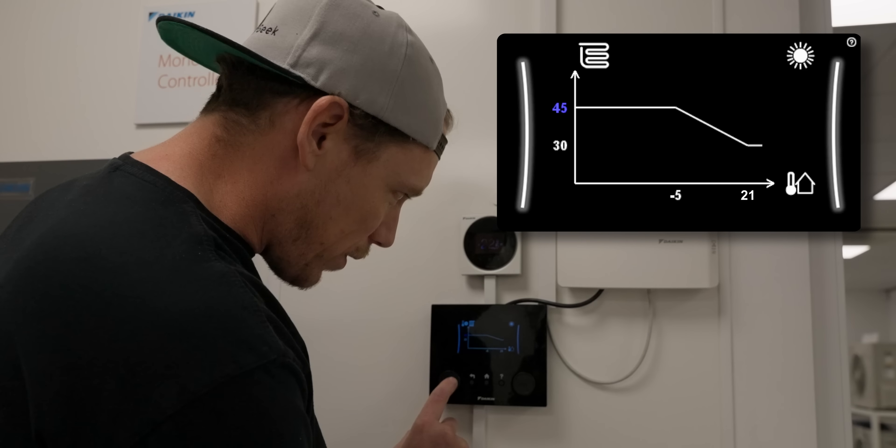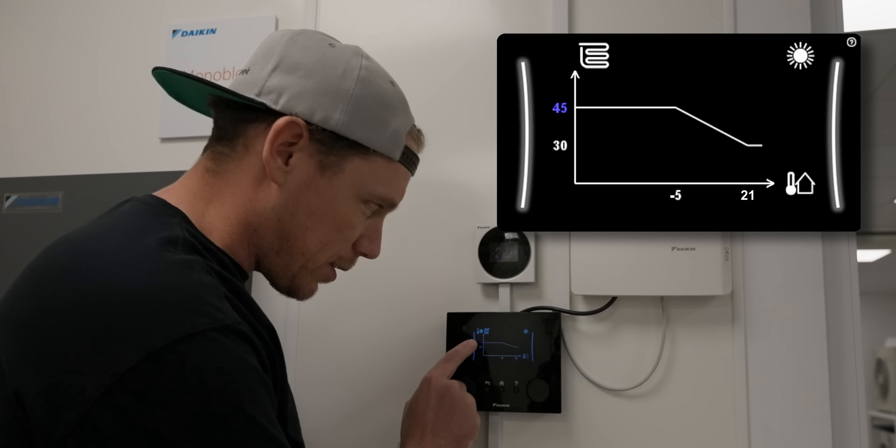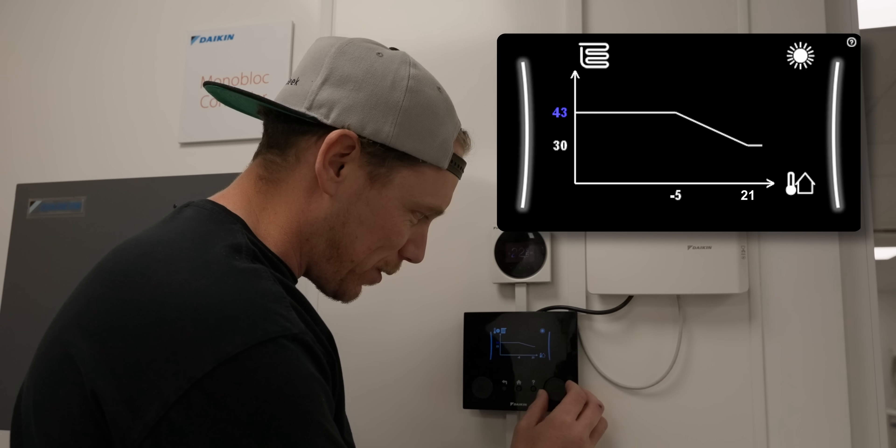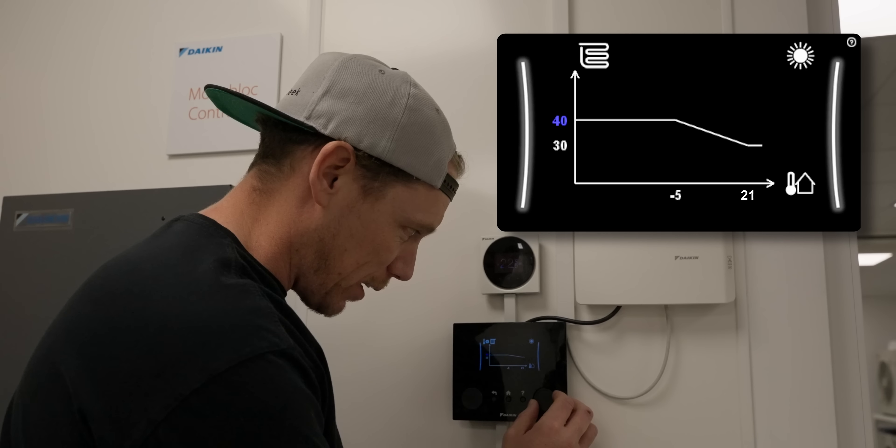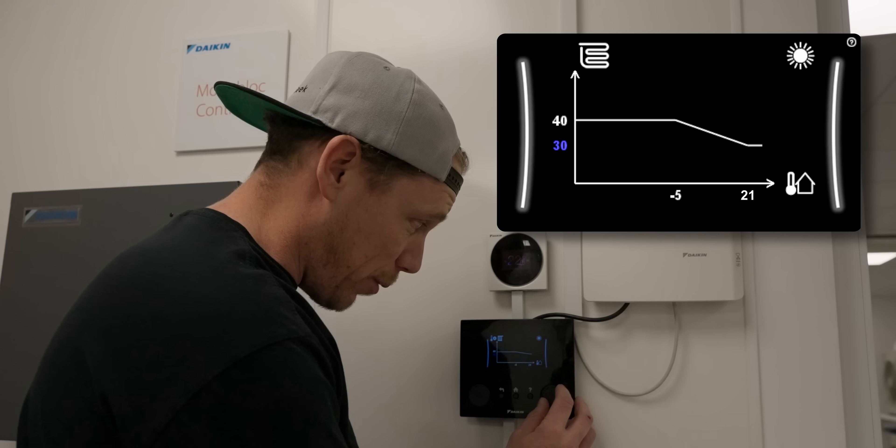WD curve, weather dependent curve. What we do here is typically we'd select 45 and we turn this down to whatever our system design temperature is. So if we design our systems for a maximum flow temperature of 40 degrees, we turn this down to 40.